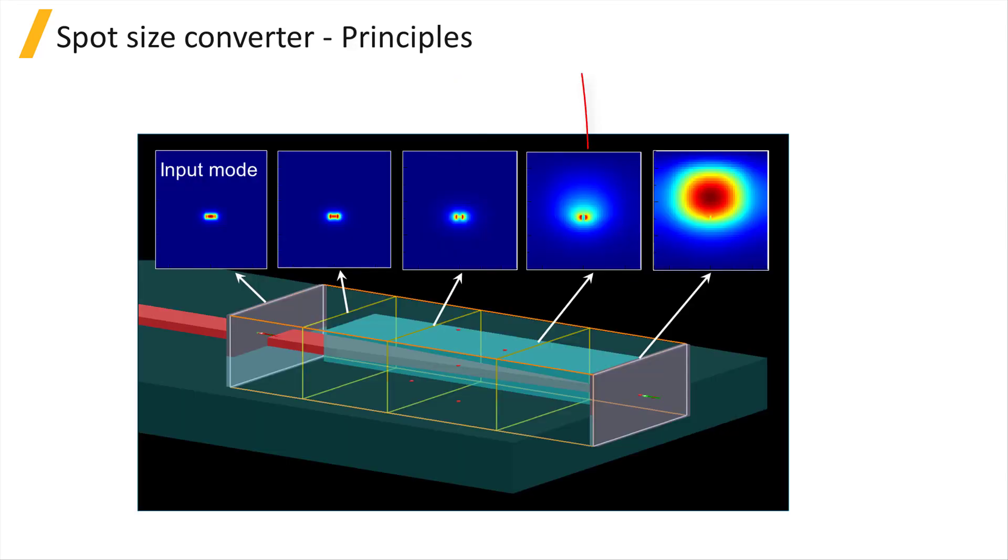When the fundamental mode of the small, high index silicon waveguide propagates through the taper, the modal fields slowly leak out of the silicon and into the larger Sion waveguide.